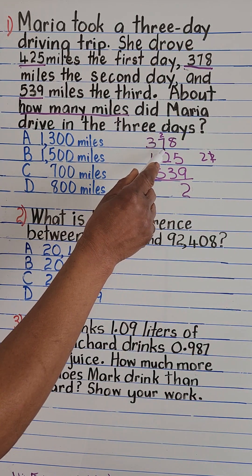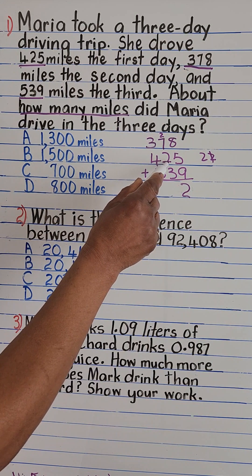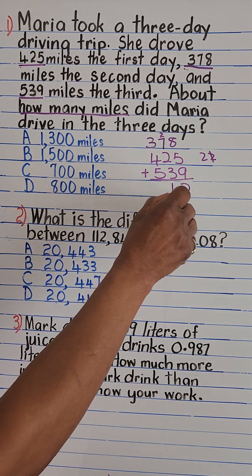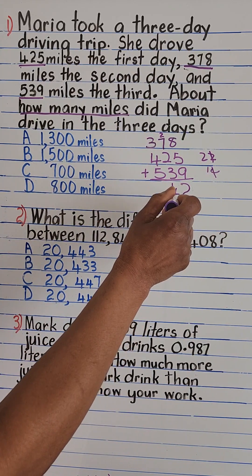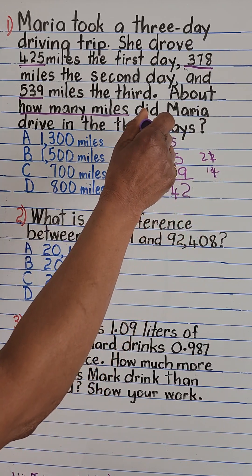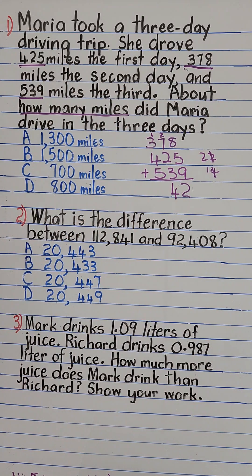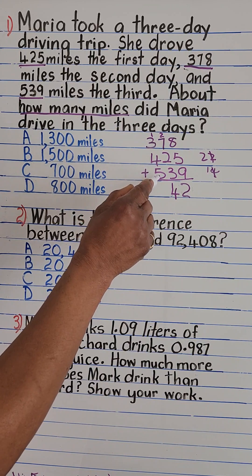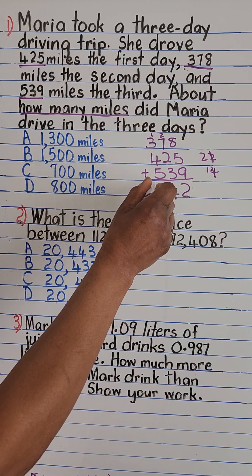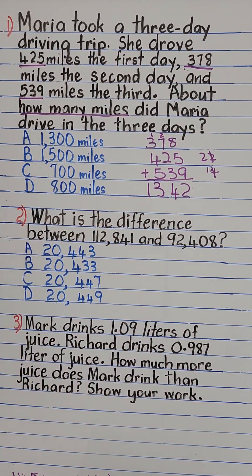2 plus 7 is 9, plus 7 is 16, plus 2 is 18, plus 3 is 21 — wait, let's recount: 7 plus 2 is 9, plus 7 is 16, plus 2 is 18 — so 4 at the bottom and carry 1 up top. Then 3 plus 1 is 4, plus 4 is 8, plus 5 is 13. So we have added our three numbers and got 1,342.